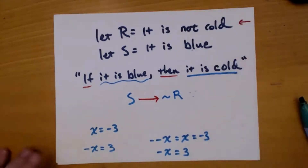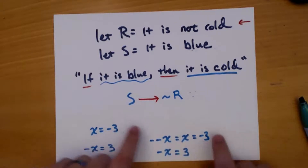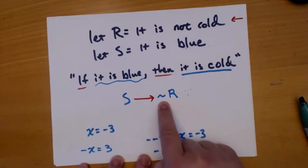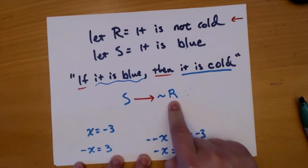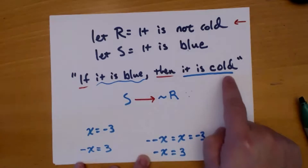Think about it this way: let's say there's a blizzard going on outside and somebody walks into your house and says 'man, it's not cold out.' You would turn to them and say 'that's not true.' 'It is not true that it is not cold' — which is saying: dude, it IS cold. That's how double negation works in logic.